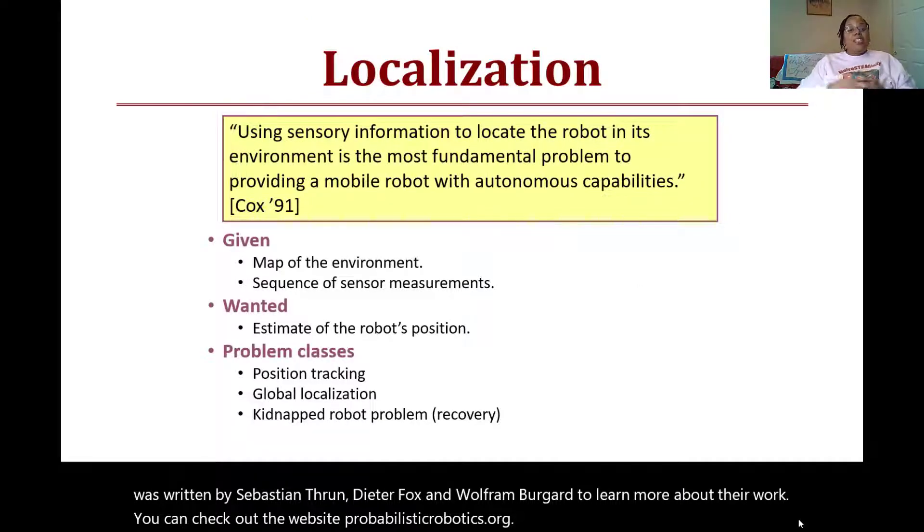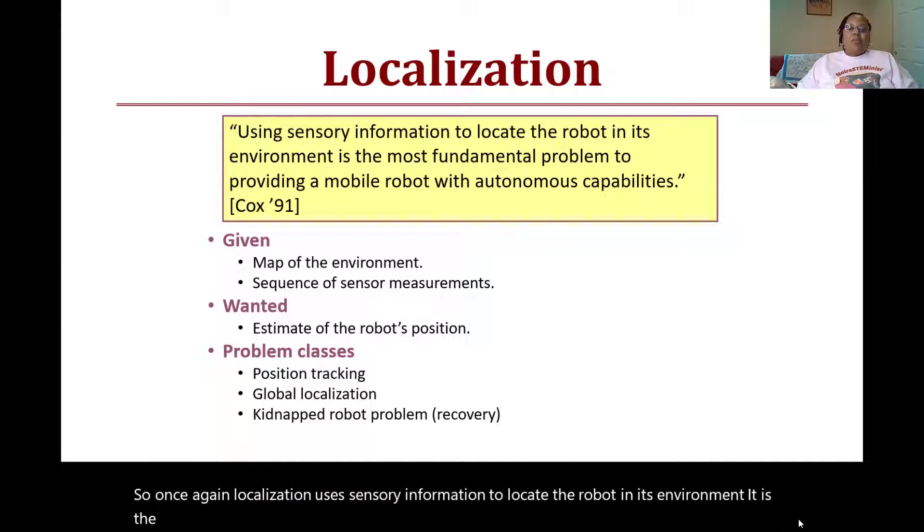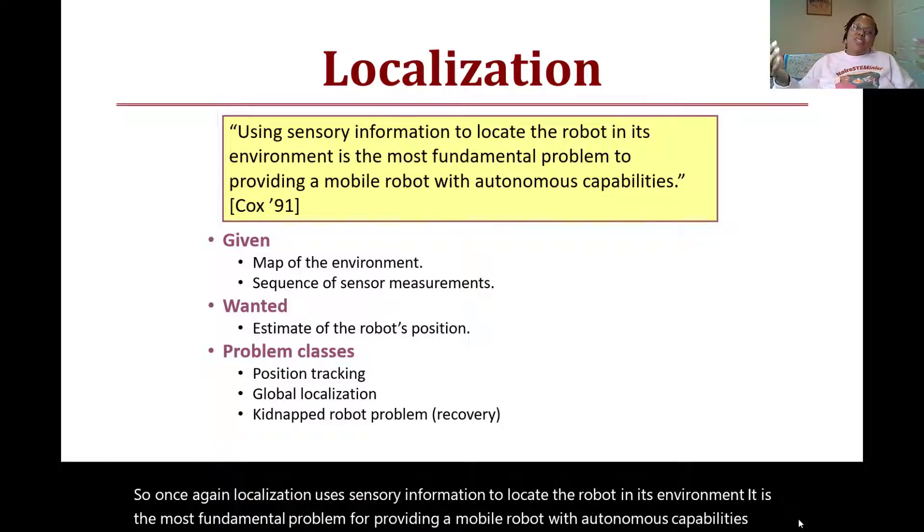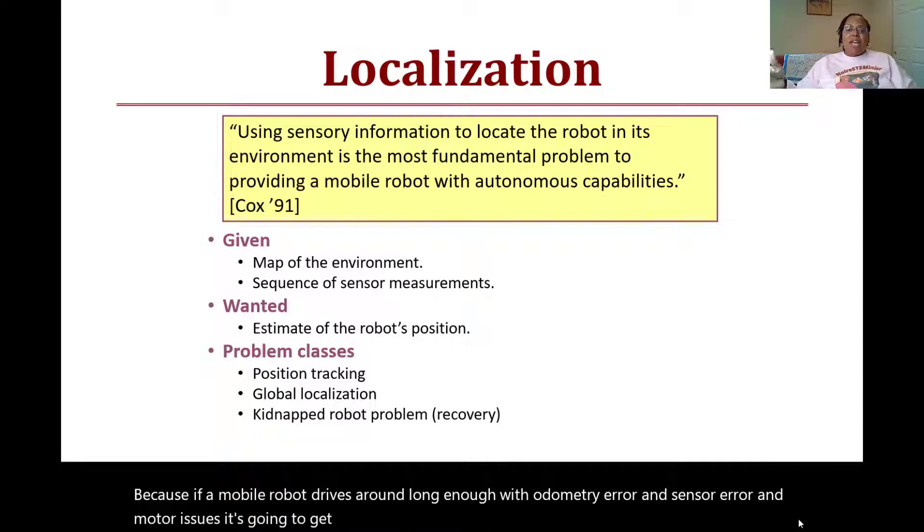Once again, localization uses sensory information to locate the robot in its environment. It is the most fundamental problem for providing a mobile robot with autonomous capabilities. If a mobile robot drives around long enough with odometry error, sensor error, and motor issues, it's going to get lost. So having a way for it to relocate or determine where it is in the world is very important.